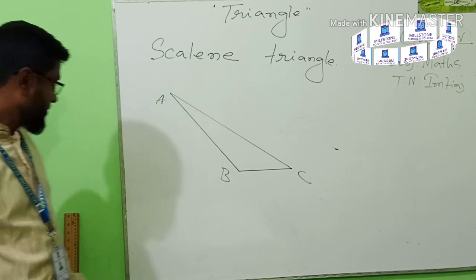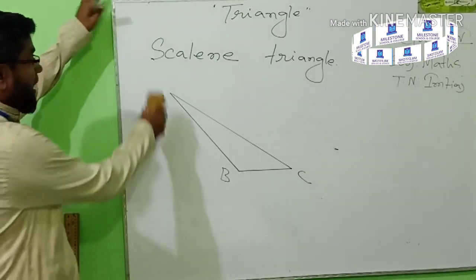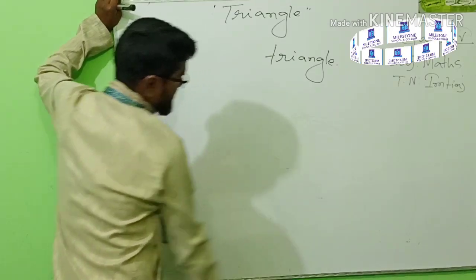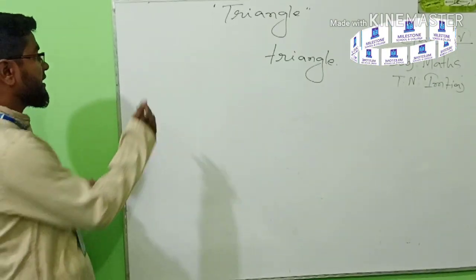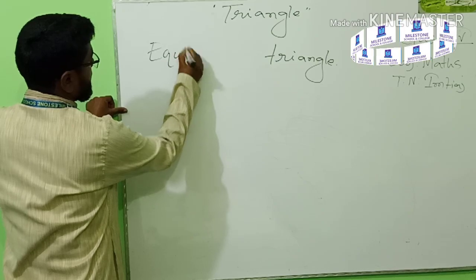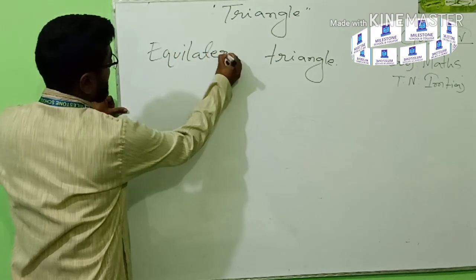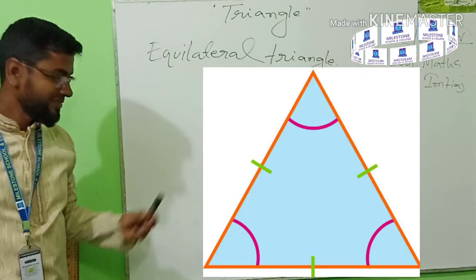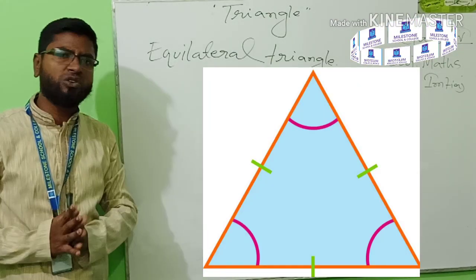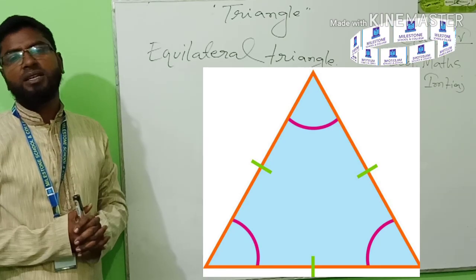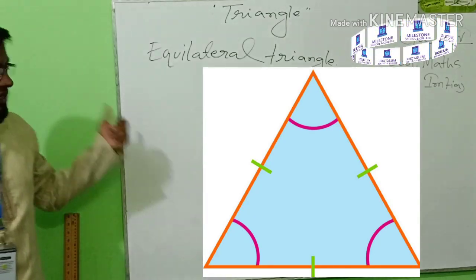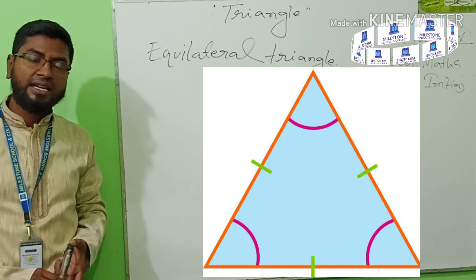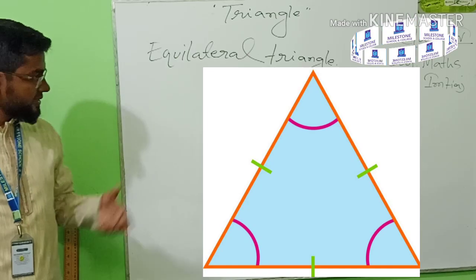Thank you. Now I will repeat all three triangles. First: equilateral triangle. If you keep the word in mind, it will be easy. A triangle whose all sides are equal is called an equilateral triangle. See the figure.